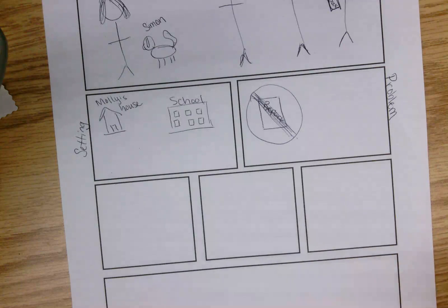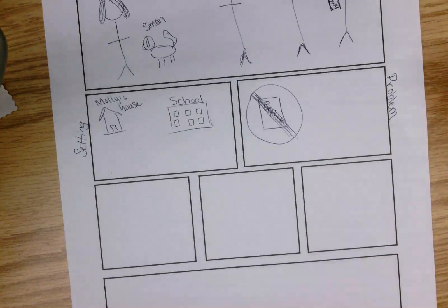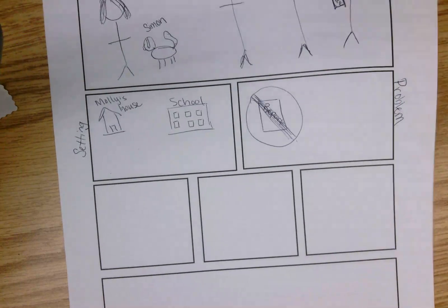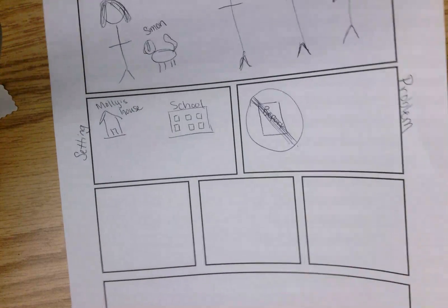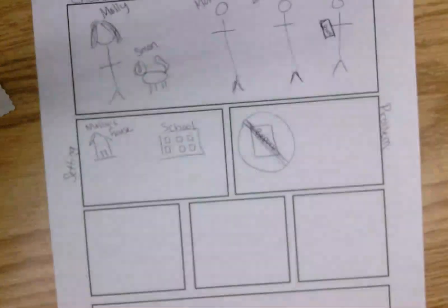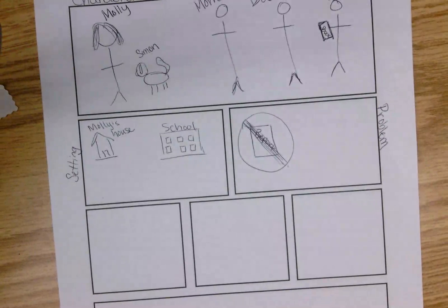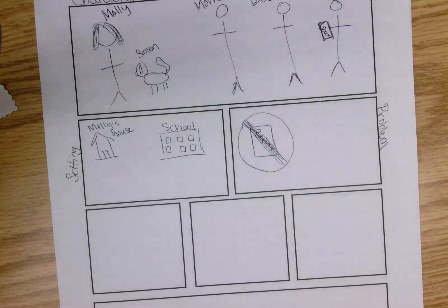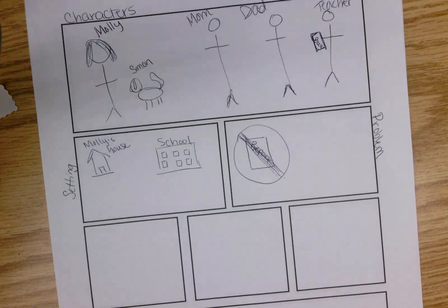There does have to be a problem because otherwise you don't have a story, right? That's one of the things that make it a story. Here Blake. One of the things that make it a story is that it has a problem, right?